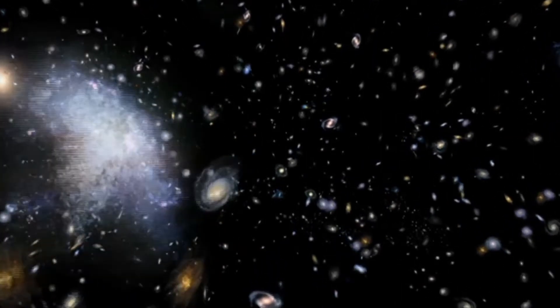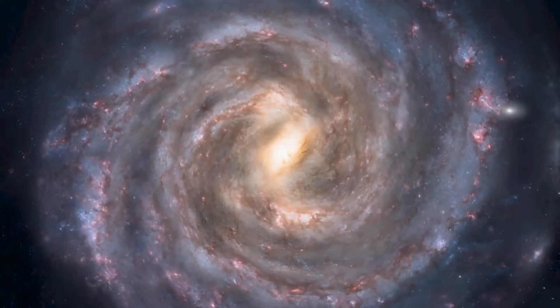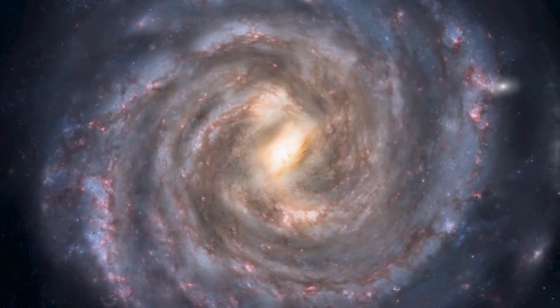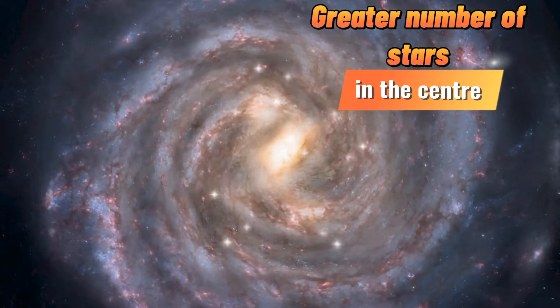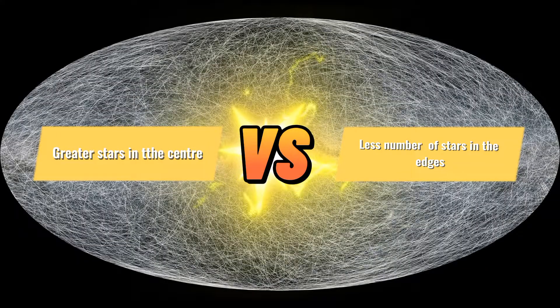Some galaxies are smooth and oval-shaped. Most galaxies have a greater number of stars in the center and fewer stars at their edges. In the center, the force of gravity is greater, which is why there are more stars there.